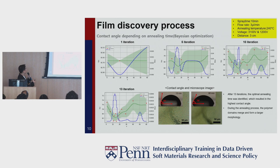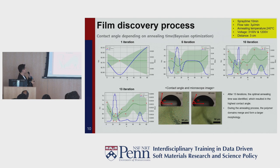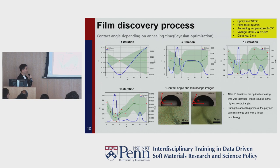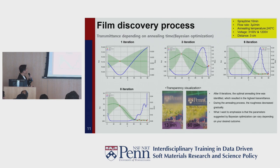This is the result of the semi-autonomous experimentation. The Y-axis shows the contact angle (displayed upside down — apologies for that) and the X-axis shows the annealing time. Using the first data point, the Bayesian optimization surrogate model approximated the objective function, and the acquisition function calculated the next sampling point. After 13 iterations, the optimal annealing time was identified: 13 minutes is the optimal annealing time to achieve the highest contact angle of 84 degrees. During the annealing process, polymer domains merge and form a larger morphology, which likely affects the contact angle.